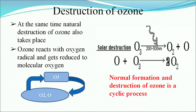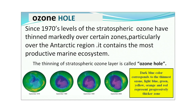Since 1970, levels of stratospheric ozone have thinned markedly over certain zones, particularly over the Antarctic region, which contains the most productive marine ecosystem. Satellite pictures taken from 1979 to 1989 to 1999 to 2009 show the gradual disappearance of the normal ozone layer — depicted by orange and red colors — until in the latest image it is almost blue, showing the thinnest layer of ozone.